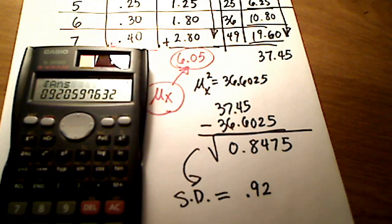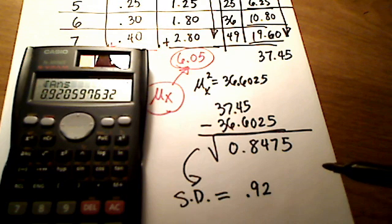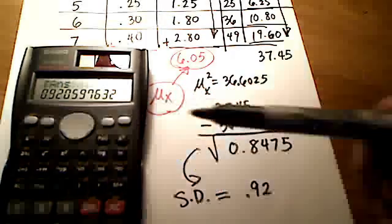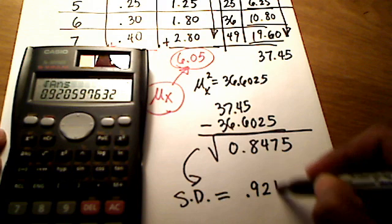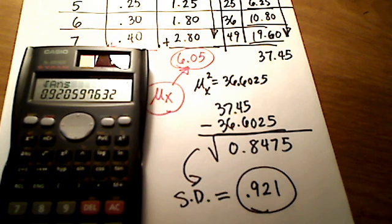Depending on your math lab, instructor, or the instructions for this problem, it might say round to the nearest tenth — which would be 0.9 — or the nearest hundredth, which would be 0.92. Or it might say round to three decimal places, the nearest thousandth. In that case the five rounds the zero up to a one, so it would be 0.921. Round it accordingly depending on what the instructions are. That's how you find the mean and the standard deviation. Look on my channel — I'm going to show you a different way to do this using Microsoft Excel. Hope that helps.